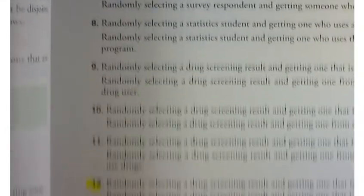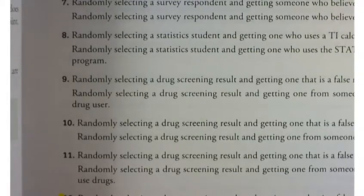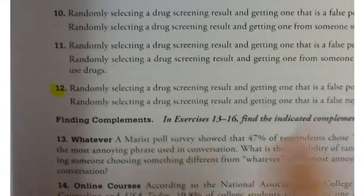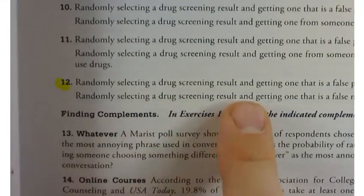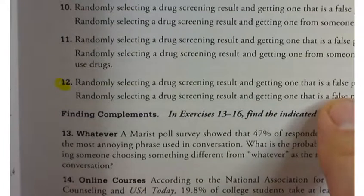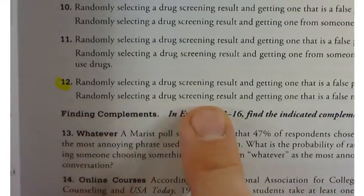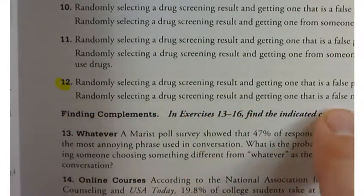How about moving down to problem number 12 here? Randomly selecting a drug screening result and getting one that is a false positive. Randomly selecting a drug screening result and getting one that is a false negative.